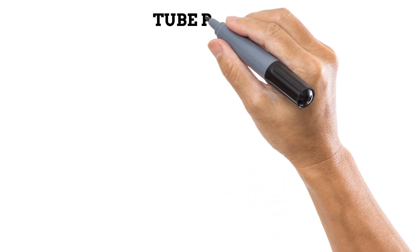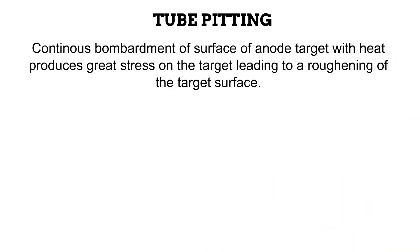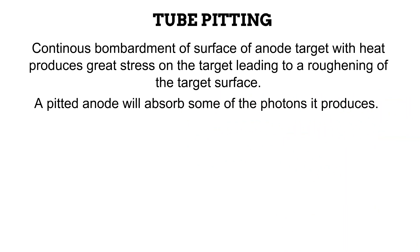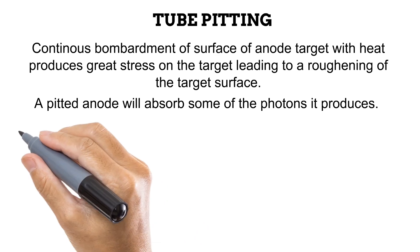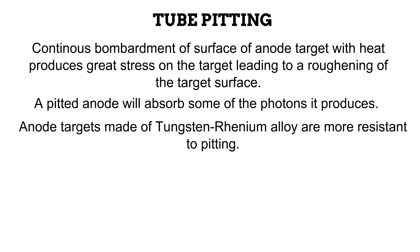X-ray photon production is an inefficient process that generates a lot of heat. Even with use of the highly resilient tungsten, excess heat on the surface of the anode will produce stress, causing the surface to get rough. This is known as tube pitting. This pitting causes the anode to absorb some of the photons it produces, reducing the efficiency of photon production and meaning less photons are produced. In order to prevent pitting from happening, some manufacturers use a combination of tungsten and rhenium to make their targets. These alloys are more resistant to pitting than using only tungsten.